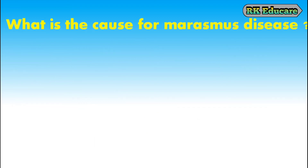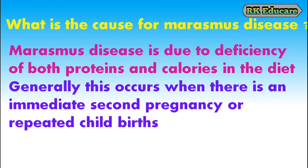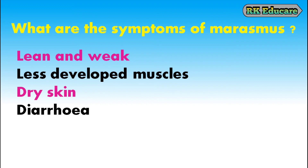What is the cause of Marasmus disease? Marasmus disease is due to deficiency of both proteins and calories in the diet. Generally, this occurs when there is an immediate second pregnancy or repeated childbirth. What are the symptoms of Marasmus? The symptoms of Marasmus are: lean and weak body, less developed muscles, dry skin and diarrhea.